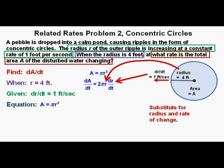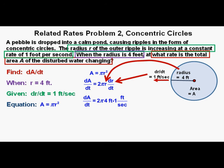We have the radius and the rate of change of radius. We can place them right into the right side of the equation. We now have dA/dt equals 2π times 4 feet times 1 foot per second. And simplifying, we have dA/dt equals 8π square feet per second, which we box in as our correct answer.